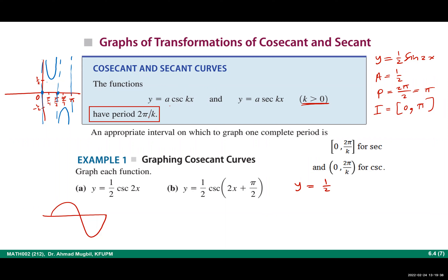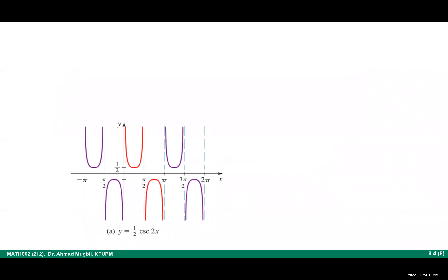At each maximum of the sine helper, draw a cup; at each minimum, draw a cap. Then erase the sine graph — it was just a guide. This gives the graph of y = ½csc(2x). The vertical asymptotes are at x = 0, π/2, and π. This covers one complete period. The graph can be continued to the right and left. The red portion is the main period, and the purple shows the periodic extensions.